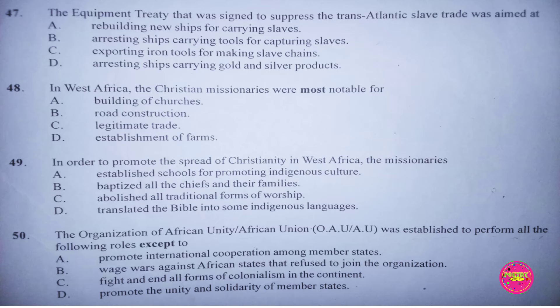Question 50. The Organization of African Unity, OAU or AU, was established to perform all the following roles except to: A. Promote international cooperation among member states, B. Wage wars against African states that refuse to join the organization, C. Fight and end all forms of colonialism in the continent, D. Promote unity and solidarity of member states. The correct answer to this question is B. Wage war against African states that refuse to join the organization.